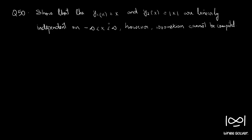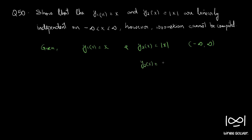Question 50. Show that y1(x) = x and y2(x) = |x| are linearly independent on minus infinity less than x less than infinity. However, the Wronskian cannot be computed. First, let's see whether these given functions are linearly independent. We have y1(x) = x and y2(x) = |x|, defined on the interval minus infinity to infinity. We know that the mod function can be written as y2(x) = x for x ≥ 0, and minus x for x < 0.